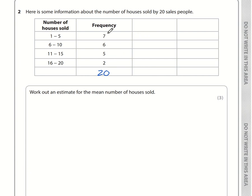Because 7 salespeople sold somewhere between 1 house and 5 houses, we're going to assume that all of them sold whatever the value is exactly halfway between 1 and 5. The halfway point of 1 and 5 is 3. To double check, add 5 plus 1, which is 6, and divide by 2, which is 3. Then we work out the other midpoints: 8, 13, and 18.